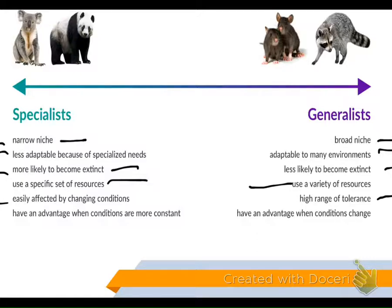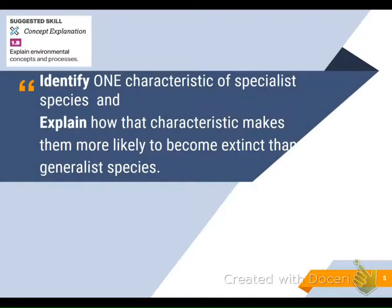A specialist has an advantage when conditions are constant, whereas the generalist has an advantage when conditions change. So, would you be able to identify one characteristic of a specialist species and explain how that characteristic makes them more likely to become extinct than a generalist species? Would you be able to do the opposite for a generalist — list one characteristic and explain how that characteristic makes it less likely to become extinct than a specialist?